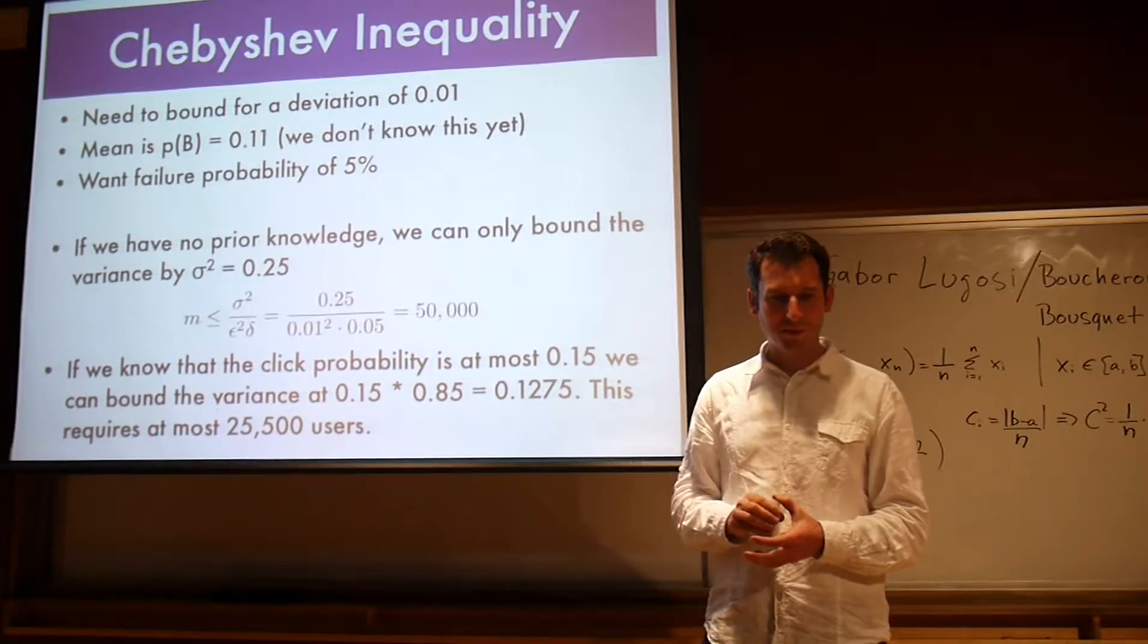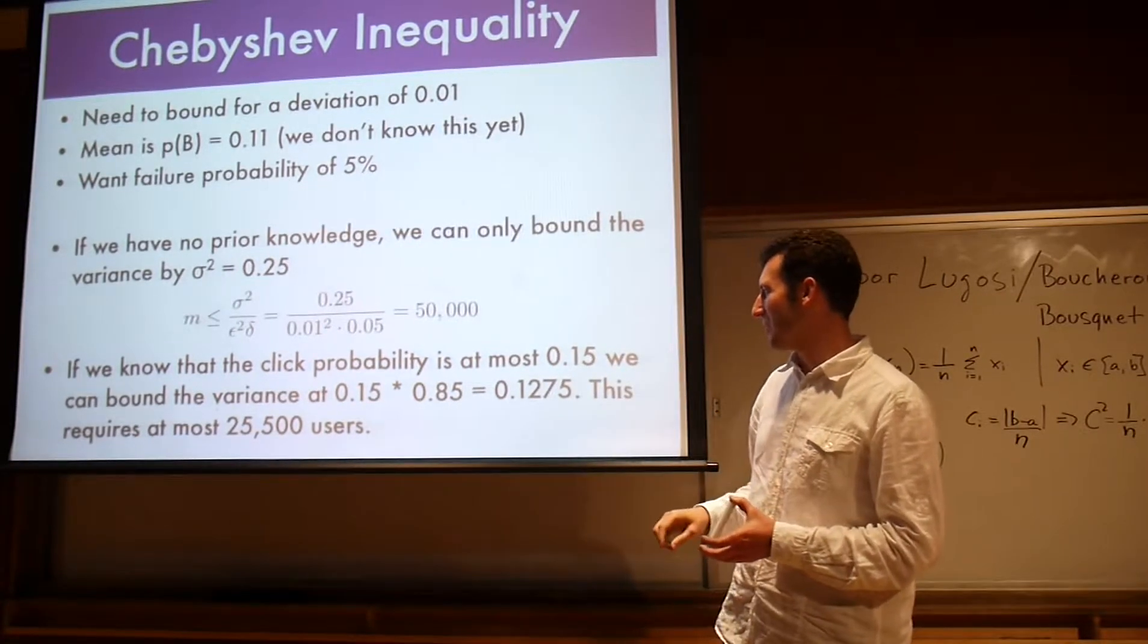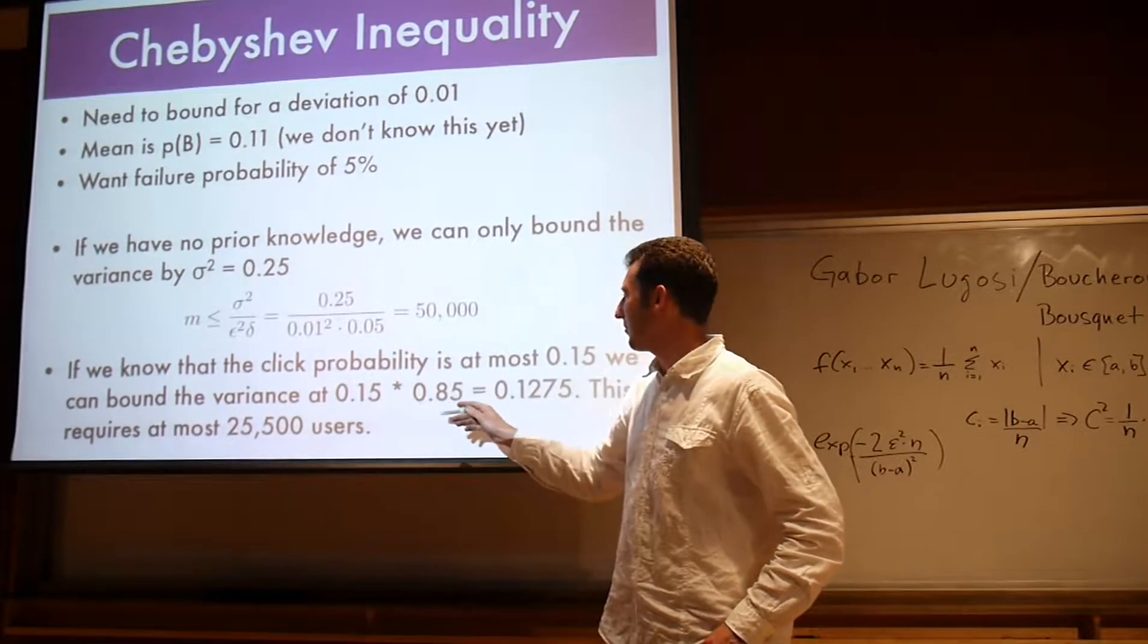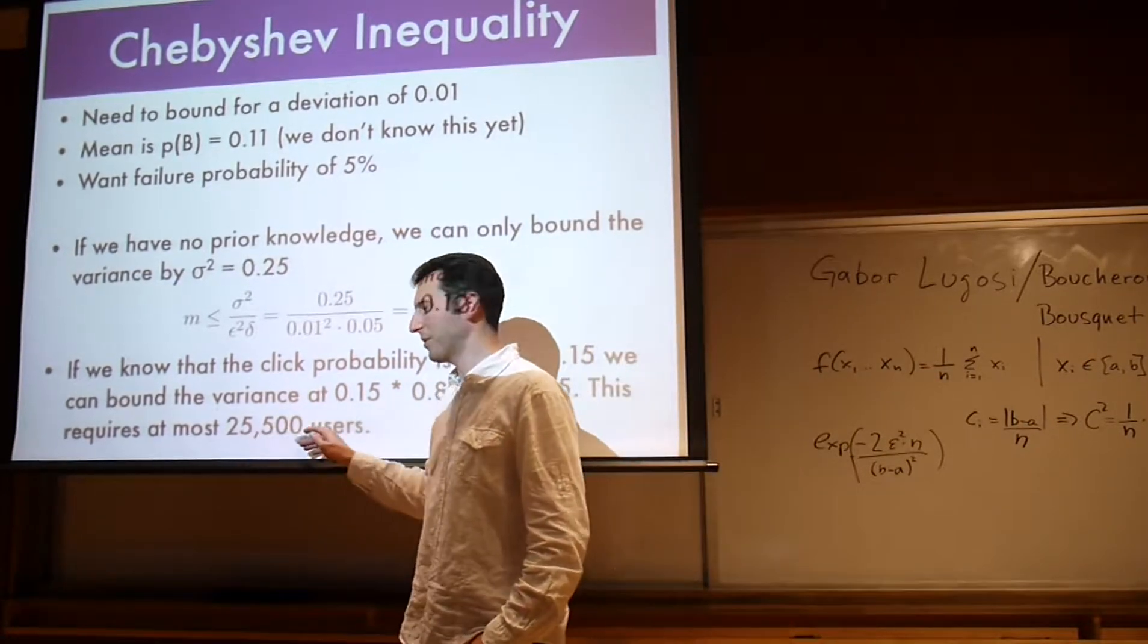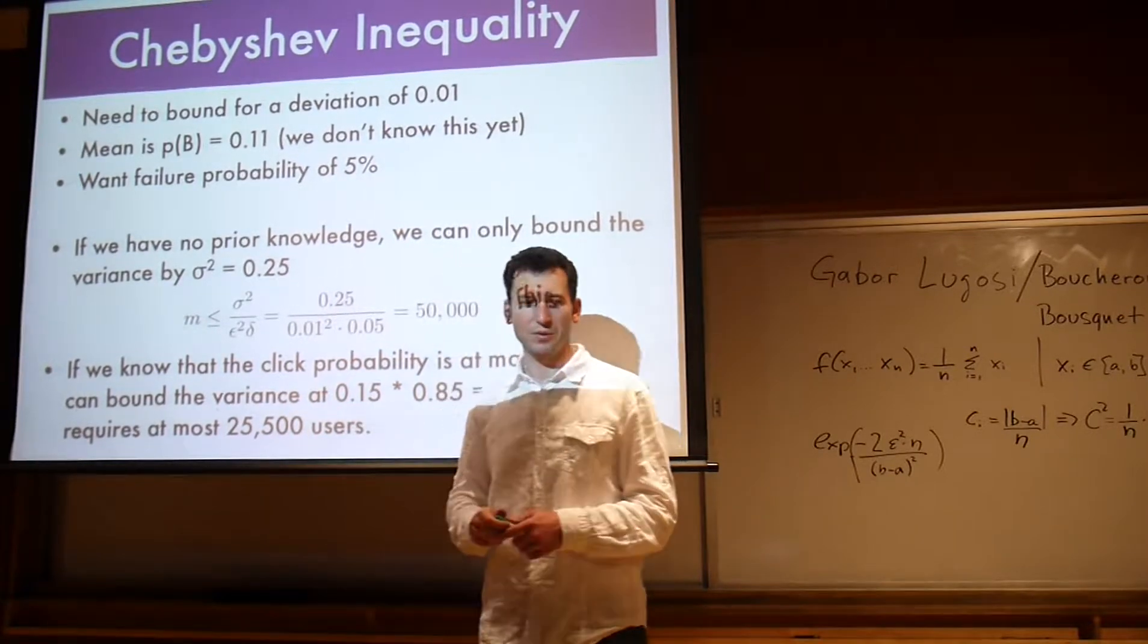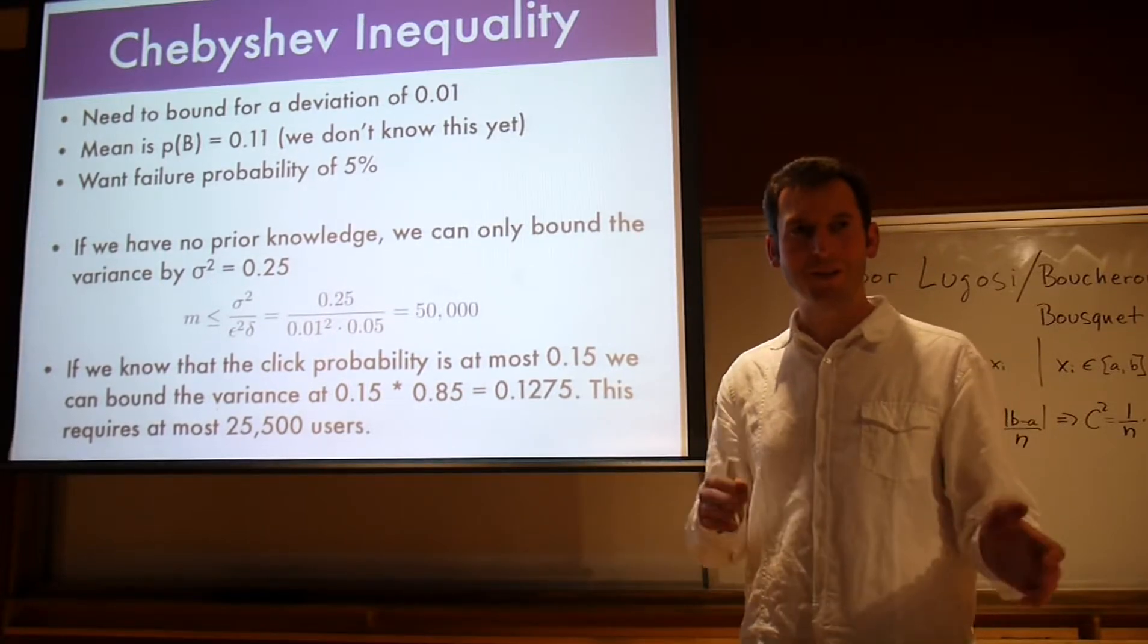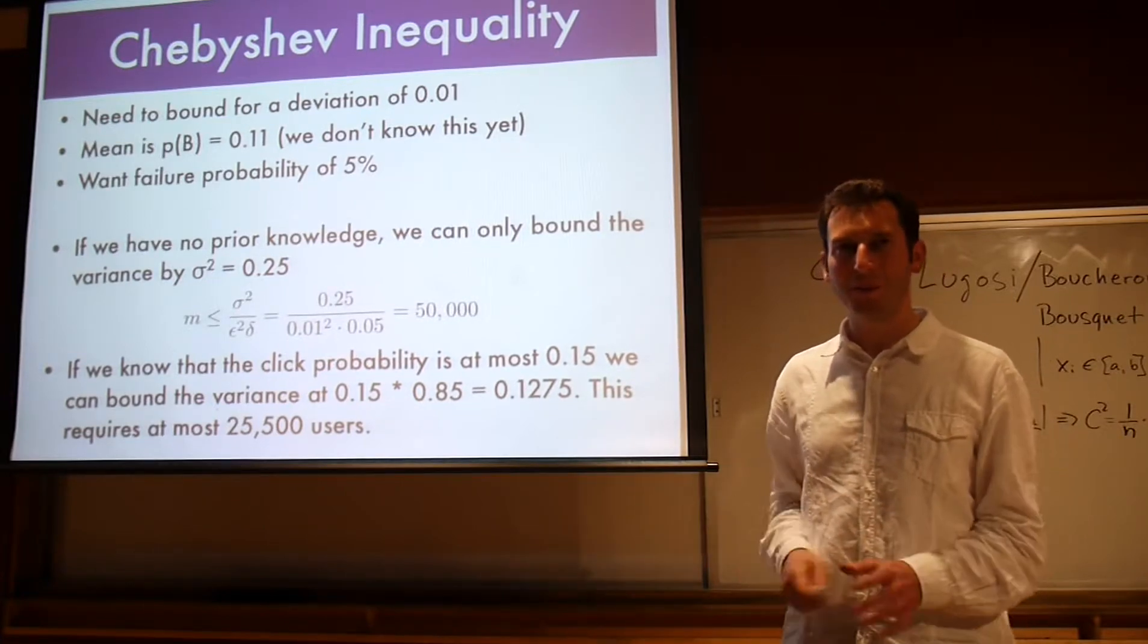Now if we actually know that the click probability is at most maybe 15%, we can bound the variance tighter. We get the variance and if we apply it in we get about 25,000 users. So by having a little bit more prior knowledge I need half the number of users. It's a big deal because that actually means money. I can tell 25,000 users earlier which design is better and I will also be making more money of those additional 25,000 users.